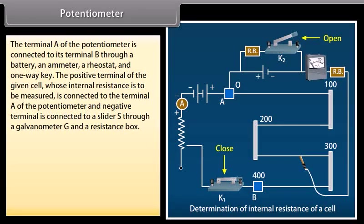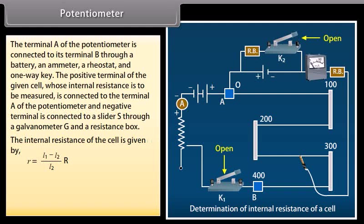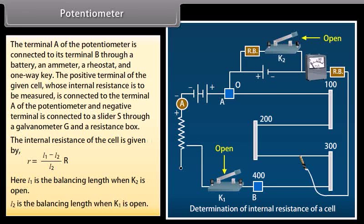The smaller the potential difference that can be measured, the more sensitive the potentiometer. Terminal A is connected to terminal B through a battery, ammeter, rheostat, and one-way key. The positive terminal of the cell whose internal resistance is to be measured connects to terminal A; the negative terminal connects to a slider S through a galvanometer G and a resistance box. The internal resistance is given by r = [(L₁ − L₂) / L₂] × R, where L₁ is the balancing length when K₂ is open and L₂ is the balancing length when K₁ is open.